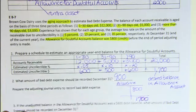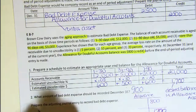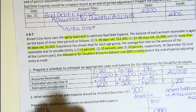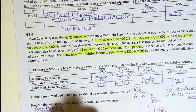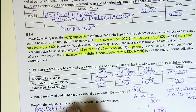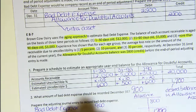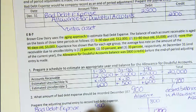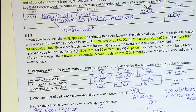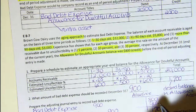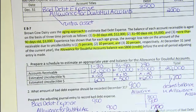The journal entry uses the same account names as the prior problem: a debit to bad debt expense for $900 and a credit to the allowance for doubtful accounts for $900. After we post that, the balance in the allowance account is $1,700.